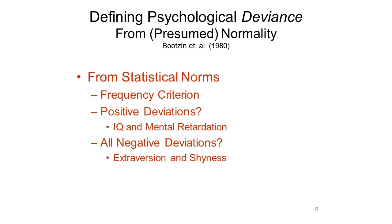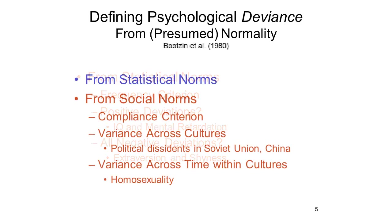A further problem is that even negative deviations are not necessarily signs of mental abnormality. For example, a person who scores more than two standard deviations below the mean on extroversion might merely be shy. Another approach is to define abnormality in terms of deviation from social norms. Every group, every organization, every society imposes certain expectations and demands on its members, and some people simply don't, or can't, do what they're supposed to do. Given that human experience, thought, and action take place in an expressly social context, this compliance criterion may well be useful for evaluating which deviations we should pay attention to.